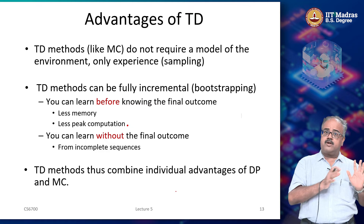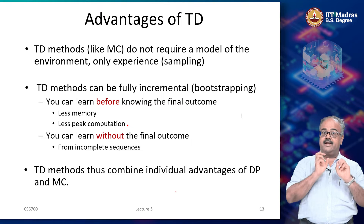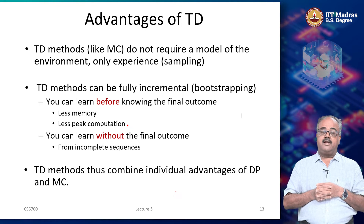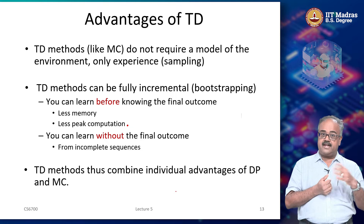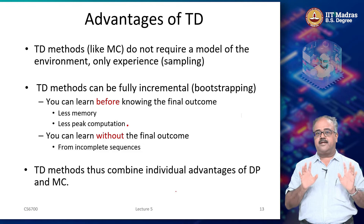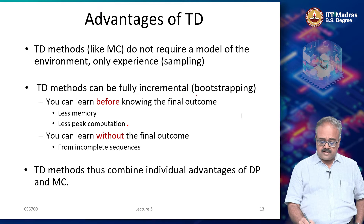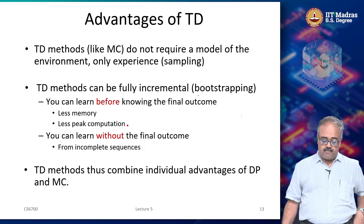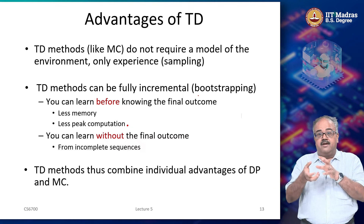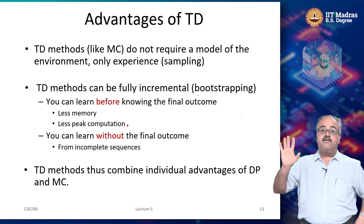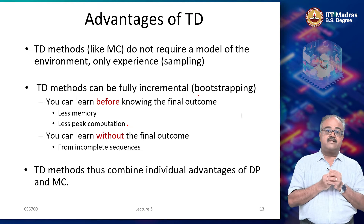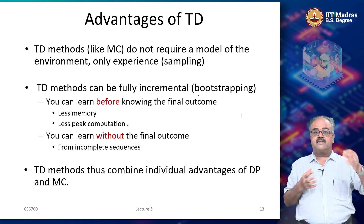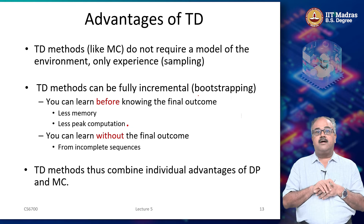TD methods, like Monte Carlo methods, do not require a model — they do not require a complete or full model of the system. They can work with real experience or a sample model, just like Monte Carlo. TD methods can also be fully incremental: you can bootstrap and learn before knowing the final outcome. As long as you have reasonable estimates for the value functions along the way, you do not have to wait until the terminal state. This also means you do not need to store the entire trajectory.